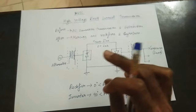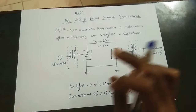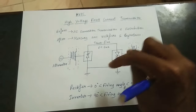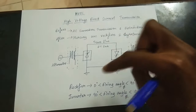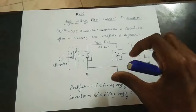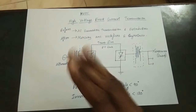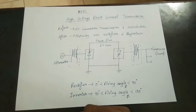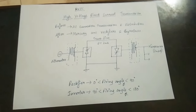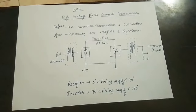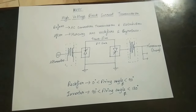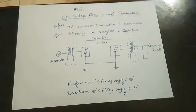Two thyratrons are connected in parallel in the reverse direction. This is the rectifier action — we call the reverse direction the inverse track. This involves power electronics packages, which are power electronics devices.